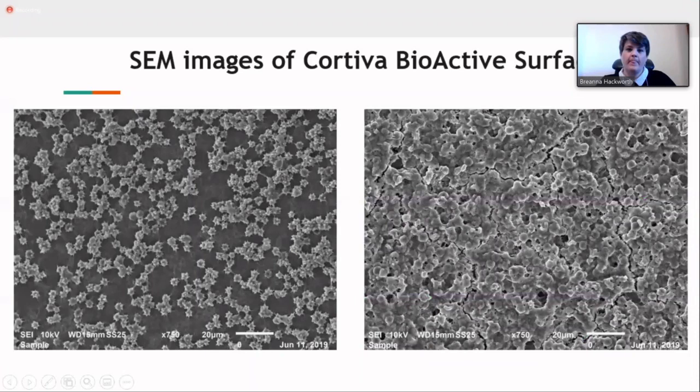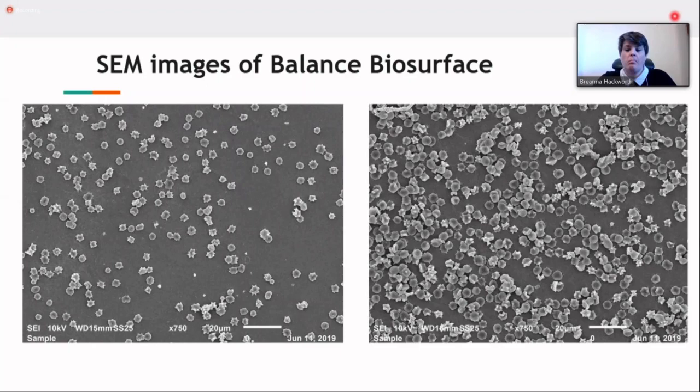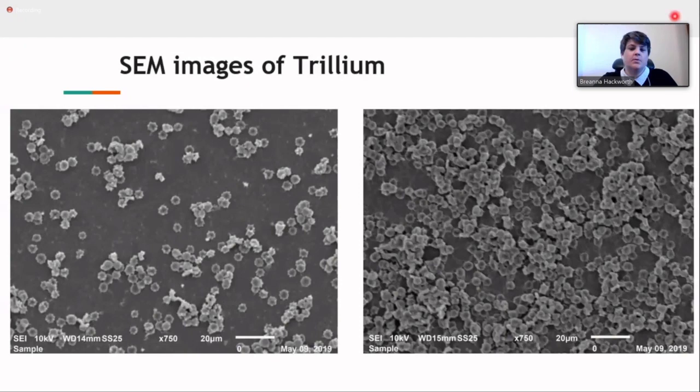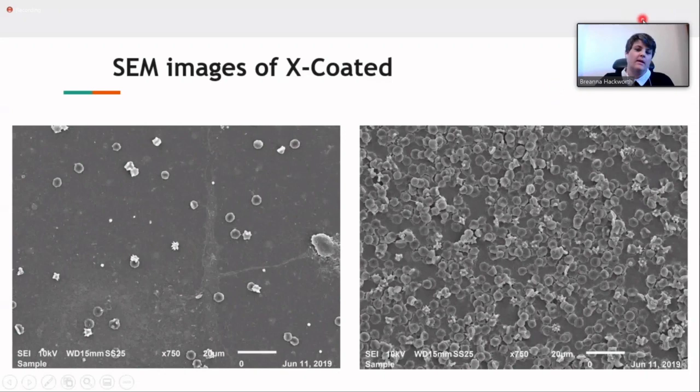In the next few slides, I'm going to show you the results or the images that we got. Instead of showing 60 photos to everyone, I decided to show on the left-hand side the lower range of adhesion, and on the right-hand side, the high range of adhesion. So you can imagine that the average is somewhere in the middle. This is the Cortiva bioactive surface. This is the balanced biosurface. Trillium. And X-coating. Something that we did want to point out here is that the image on the right-hand side, this one, is actually an outlier in the group. But we did want to stay true to showing the low end and higher end of adhesion, so we did still show that. Most of the images for X-coating look similar to the one on the left.